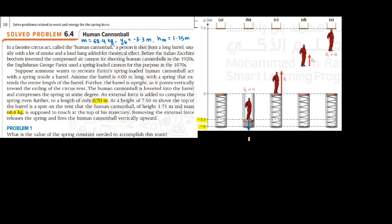You remove the external force to release the spring, and the human cannonball is fired up to reach a height of 7.5 meters. The height of the human is 1.75 meters, and we need to find what is the value of spring constant needed to accomplish this stunt.